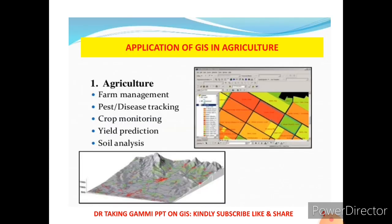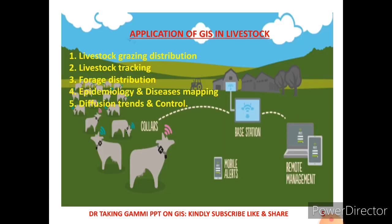I'd like to show what are the important applications of GIS in agriculture. In case of agriculture, GIS helps in farm management, disease tracking, crop monitoring, yield prediction, and soil analysis. All these data can easily be collected with the help of GIS. I'd also like to show what are the applications of GIS in livestock management.